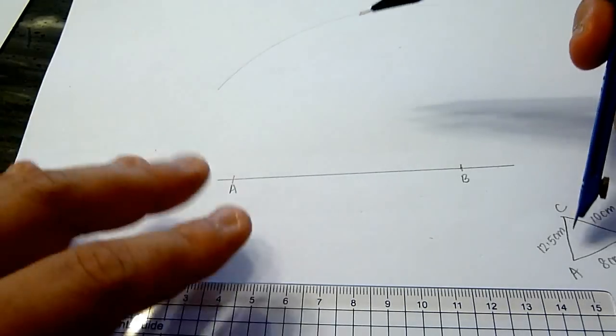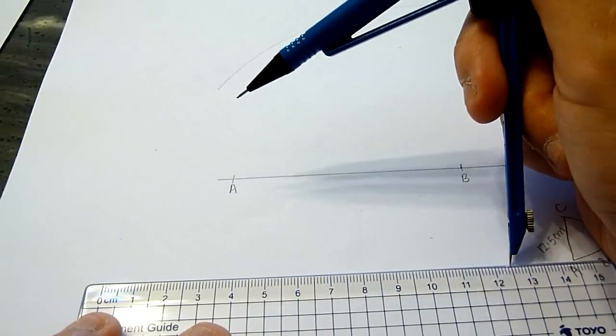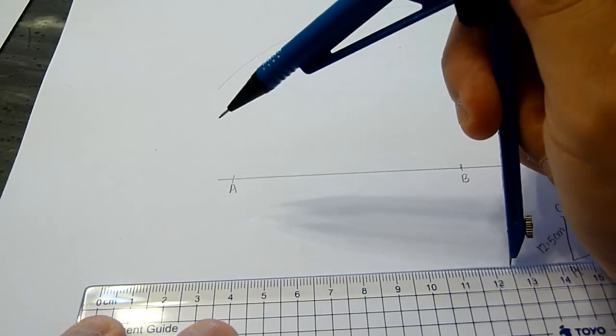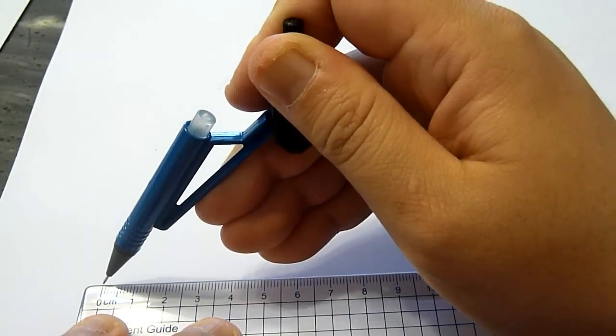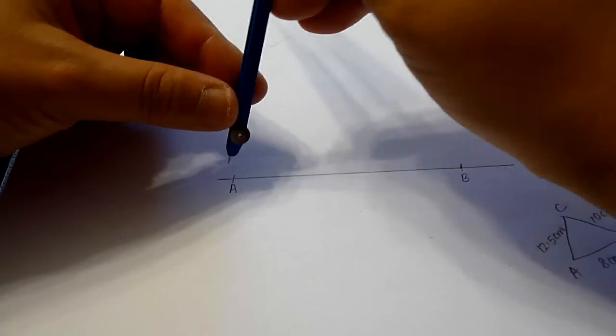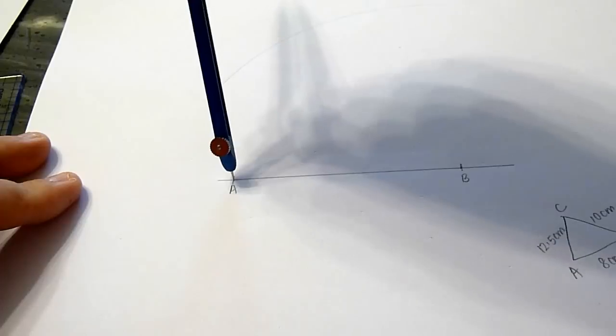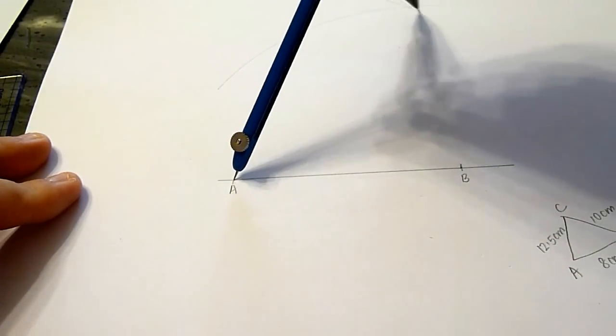Next, AC is 12.5 cm. We do the same by stretching the arm of the compass to 12.5 cm first, and place the sharp end at point A. Then we mark the arc.